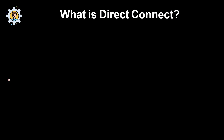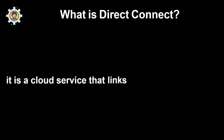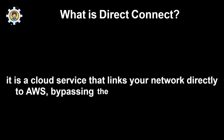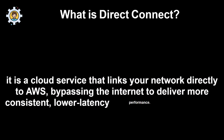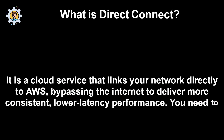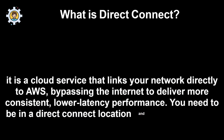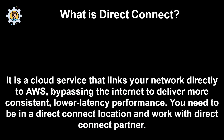What is DirectConnect? It is a cloud service that links your network directly to AWS, bypassing the internet to deliver more consistent, lower latency performance. You need to be in a DirectConnect location and work with a DirectConnect partner.